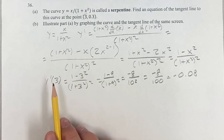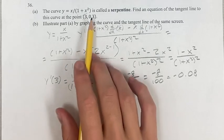So this is the derivative when x equals 3, which means it's the slope of the tangent line at that point (3, 0.3).